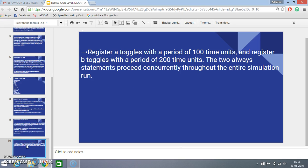And finally the program ends with register A toggles with a period of 100 time units and register B toggles with a period of 200 time units. The two always statements proceed concurrently throughout the entire simulation run. Thanks for watching this video. Bye.